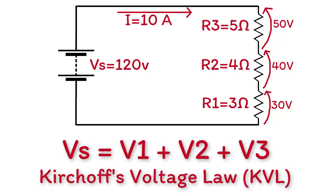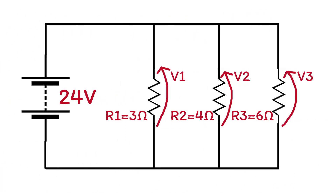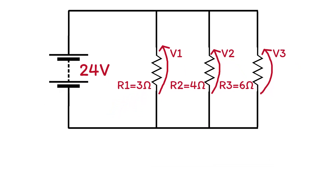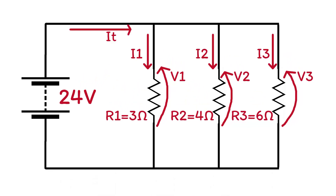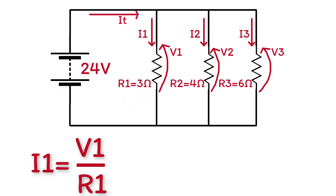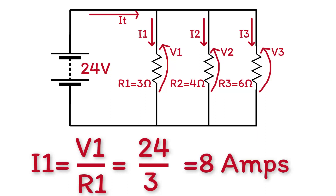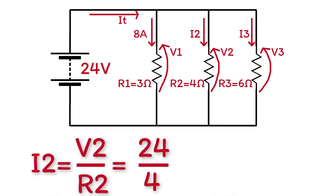This is called KVL, or Kirchhoff's Voltage Law, which we will discuss in another video. For the next example, we have three parallel resistors. Unlike series resistors where current is the same, parallel resistors share the same voltage. Applying Ohm's Law: I1 equals V1 over R1. Since V1 equals the battery voltage of 24 volts, I1 equals 24 over 3, which equals 8 amps. I2 equals 24 over 4, which equals 6 amps.